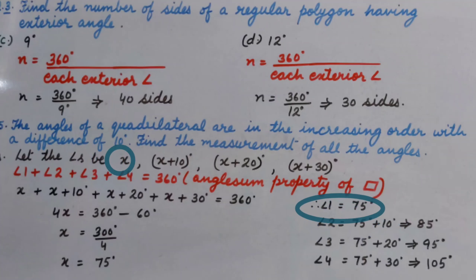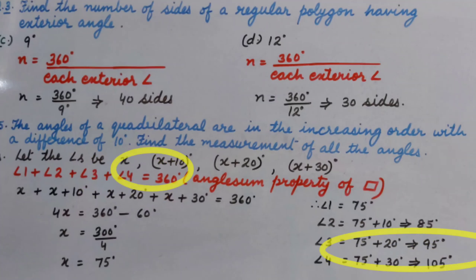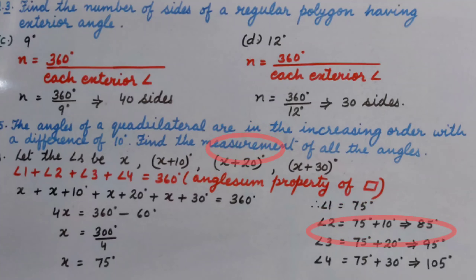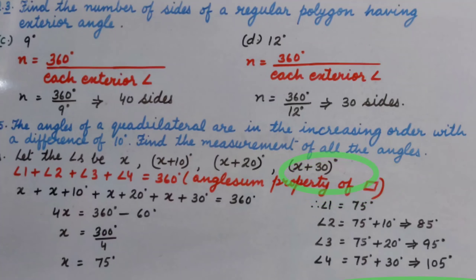So angle 1 is 75 degrees. Angle 2 is 75 plus 10 degrees, that is 85 degrees. Angle 3 is 95 degrees. Angle 4 is 105 degrees.